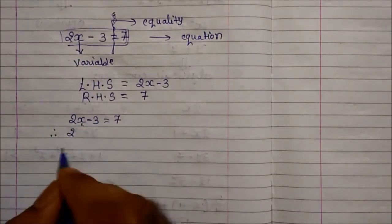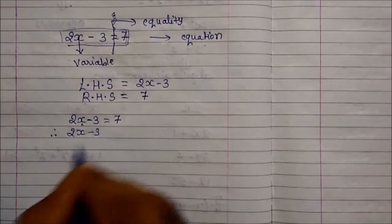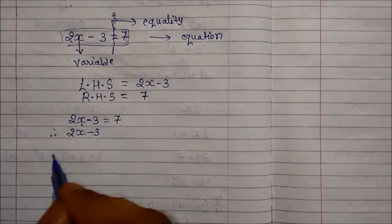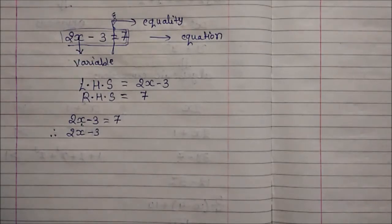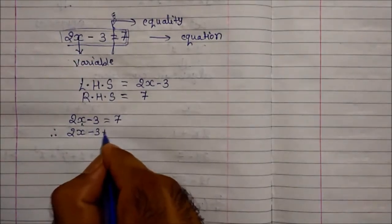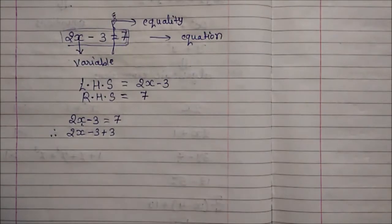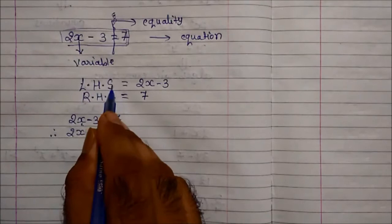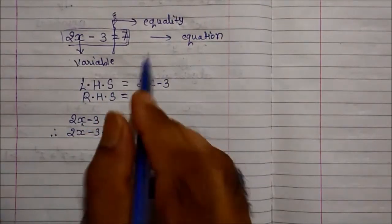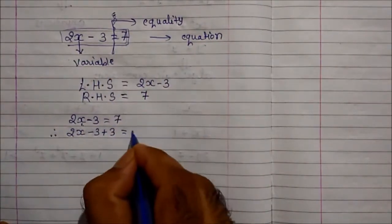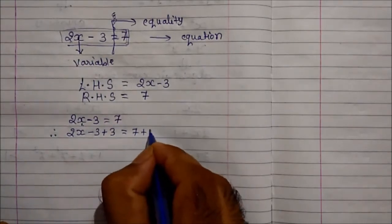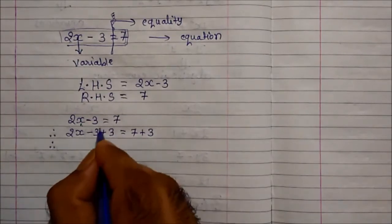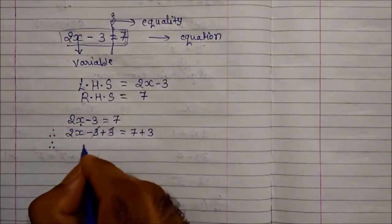First we will remove minus 3. So 2x-3 — since we want to remove minus 3, we will use the opposite number, that is plus 3. But since we are adding 3 to the left hand side, and the equality sign is there, we have to add 3 on the right hand side also.